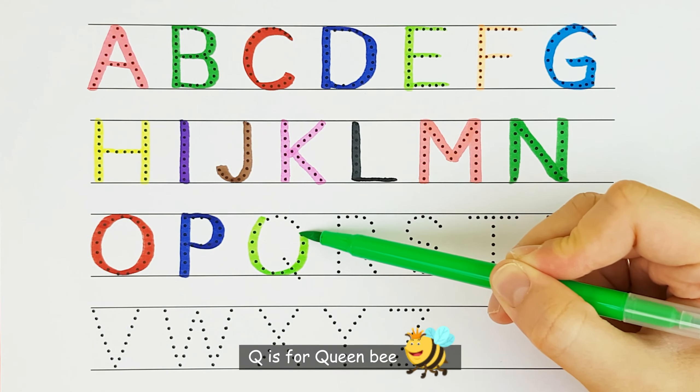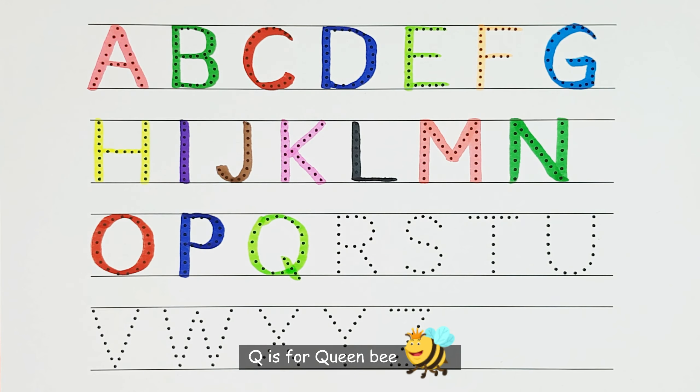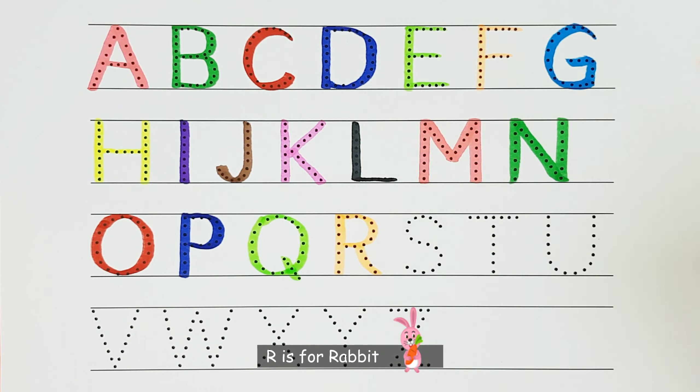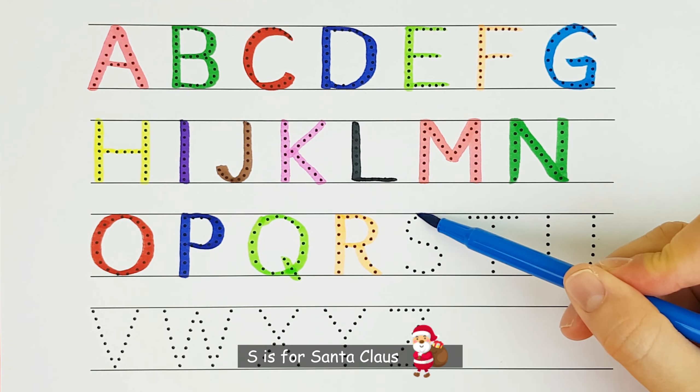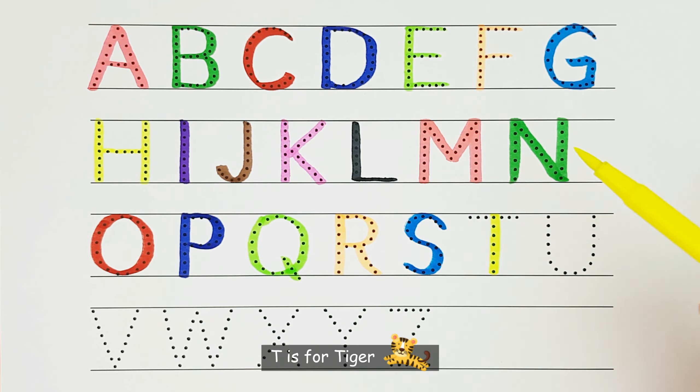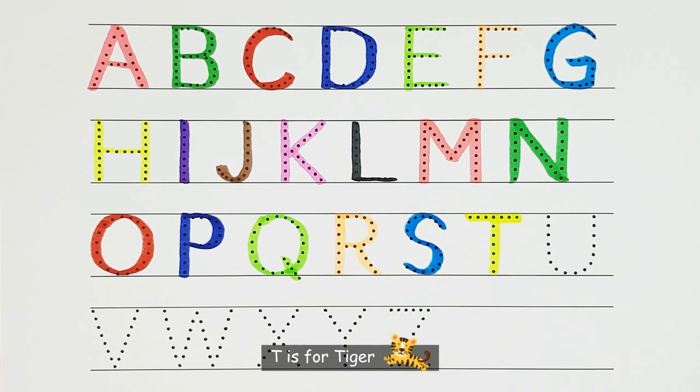Q. Q is for queen bee. R. R is for rabbit. S. S is for Santa Claus. T. T is for tiger.